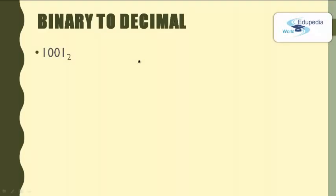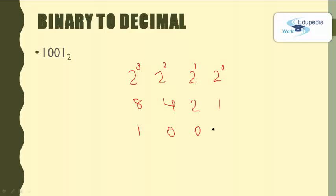Let's try another conversion. We are given the binary number 1001. The powers of 2 are: 2⁰=1, 2¹=2, 2²=4, 2³=8. In the multiplication row: 1×1=1, 2×0=0, 4×0=0, 8×1=8. If we sum 8 and 1 we get 9. So the binary number 1001 represents the decimal number 9.